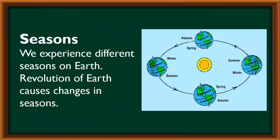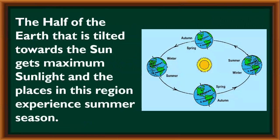Seasons. We experience different seasons on earth. Revolution of earth causes changes in seasons. The half of the earth that is tilted towards the sun gets maximum sunlight, and the places in this region experience summer season.